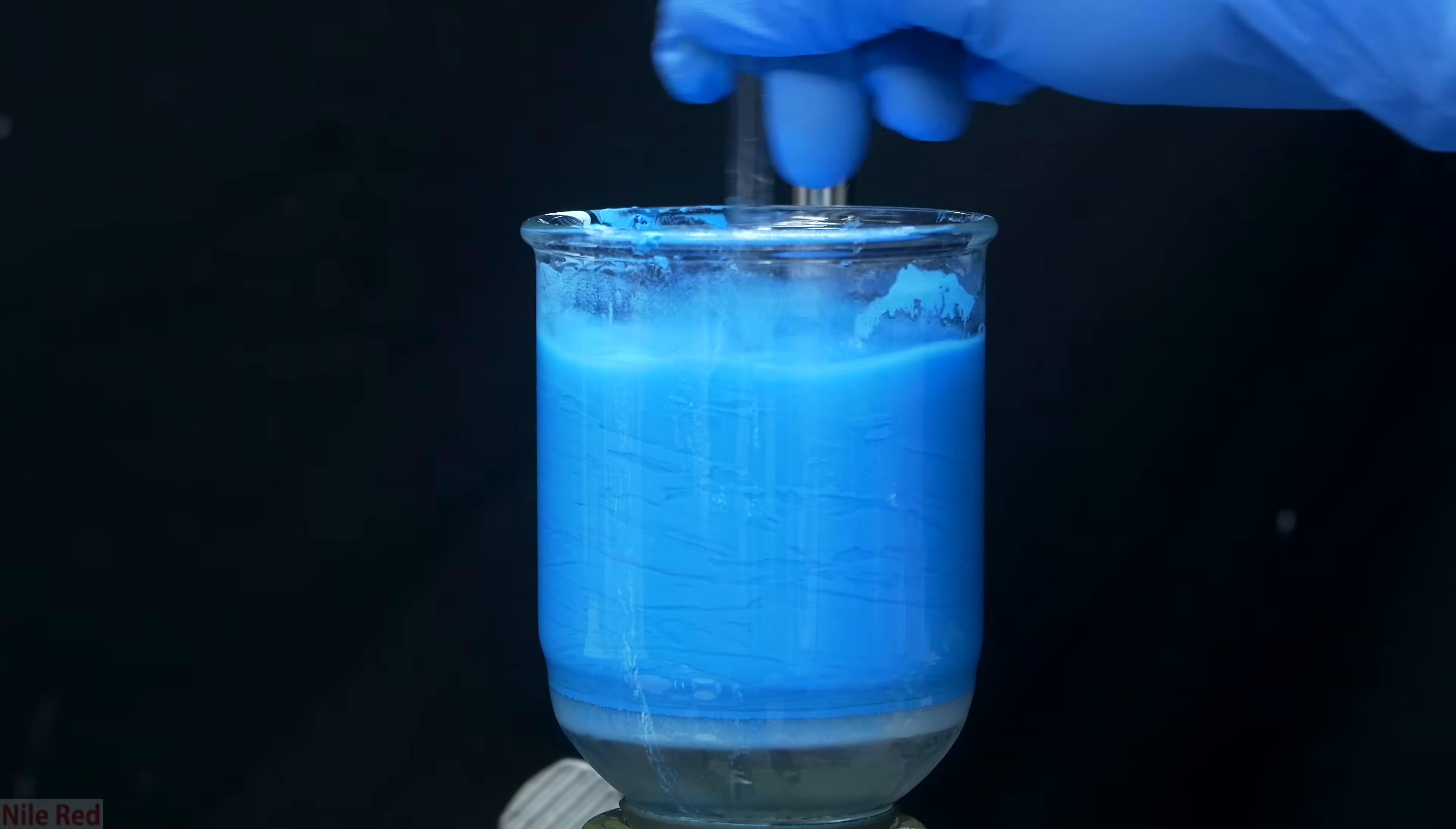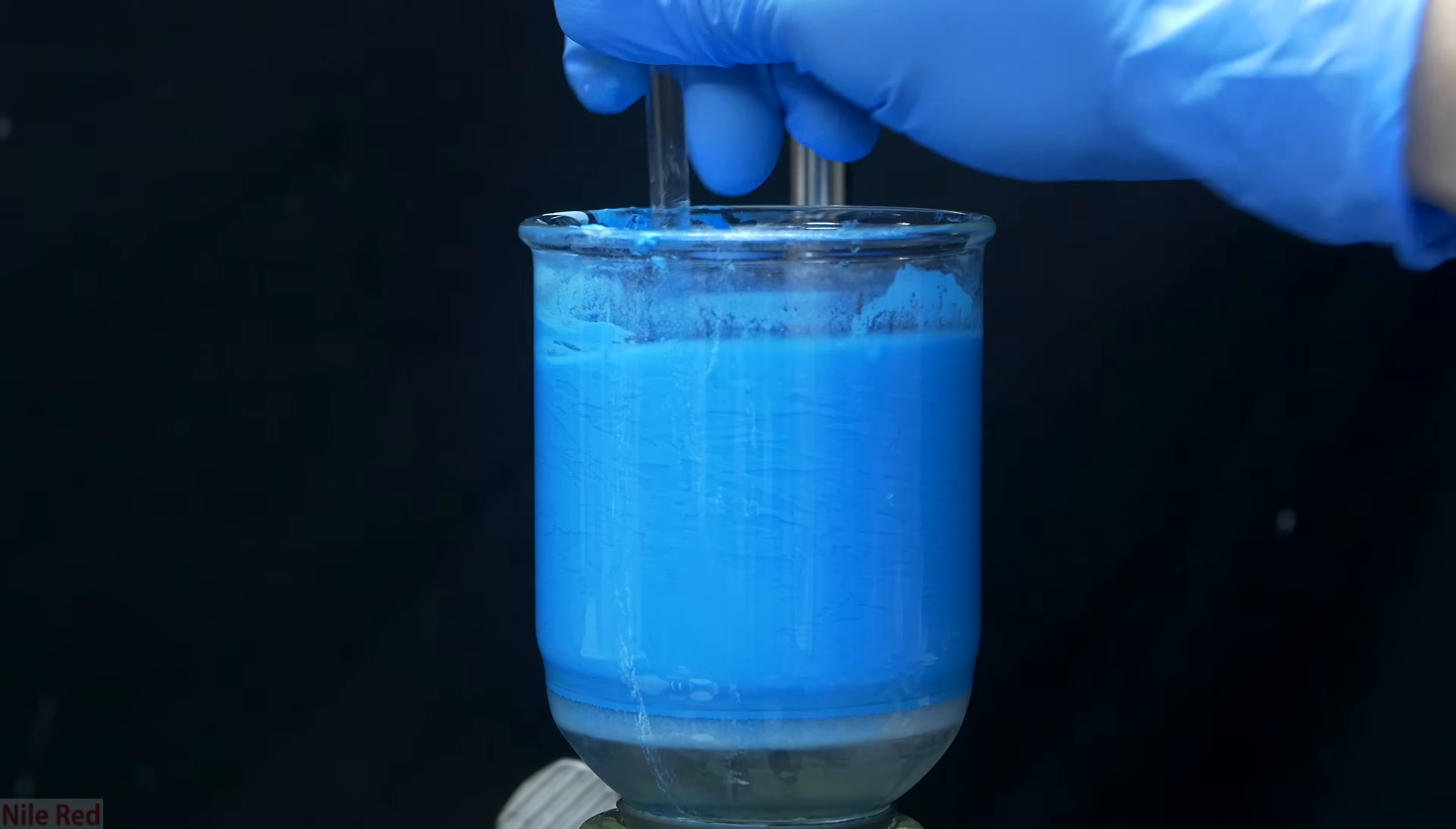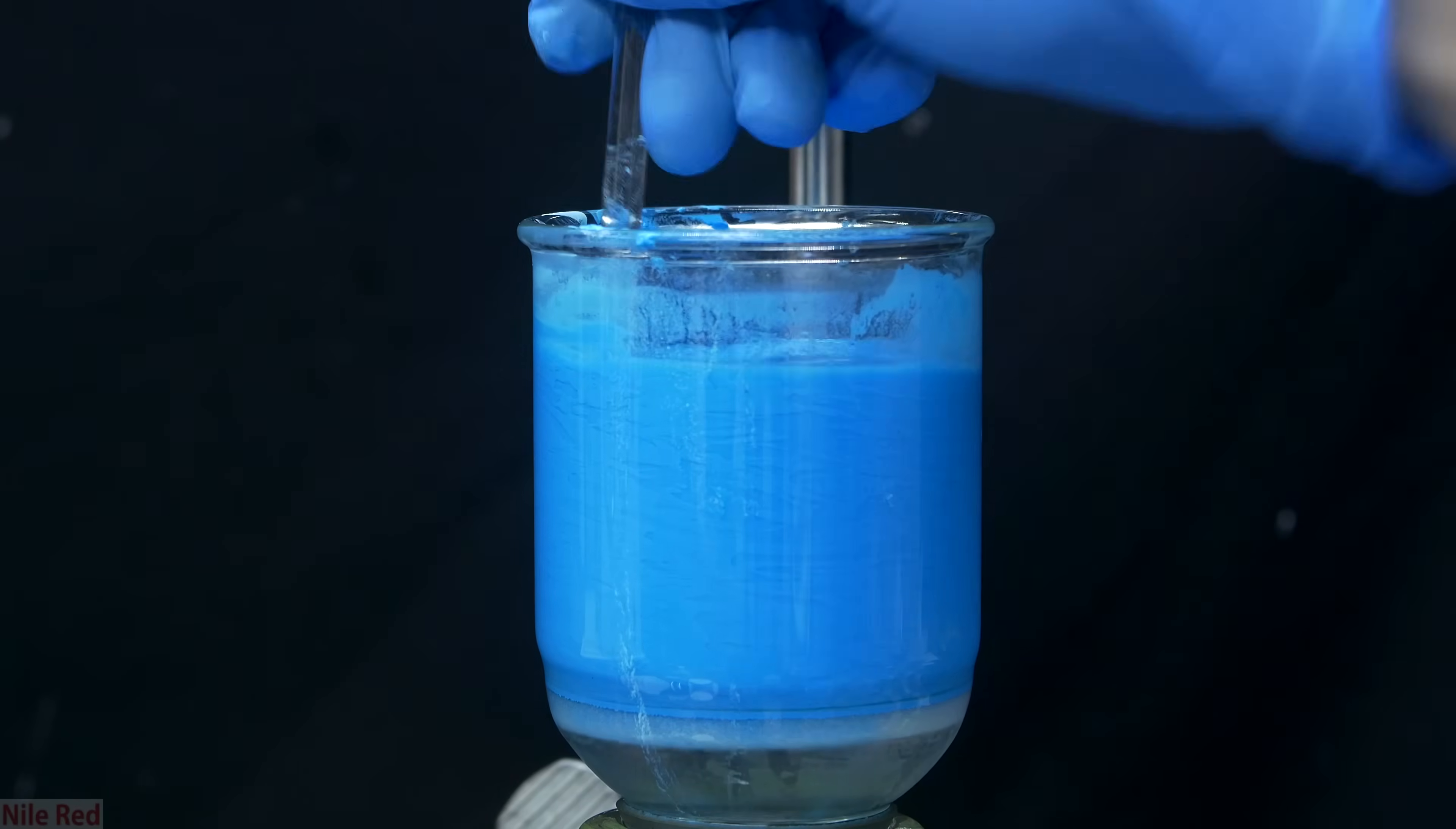With each acetone washing, I used a glass stir rod to stir the copper hydroxide around, and make sure that I break up any large chunks. When I was satisfied that there were no large chunks, I pulled the vacuum and removed all of the acetone. I then added more acetone, and repeated the process of breaking up any large chunks, and in total the washing steps were repeated two or three times.